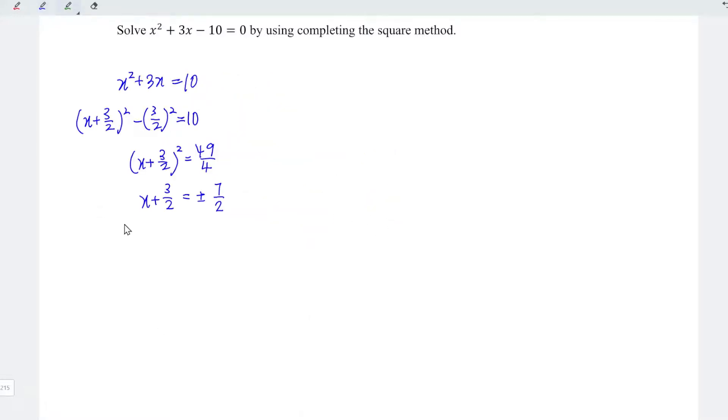Which means we should have two possibilities. Firstly, x plus 3 over 2 equals negative 7 over 2. Or, x plus 3 over 2 equals positive 7 over 2.